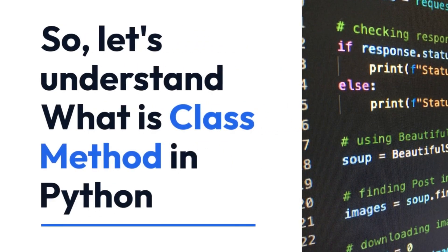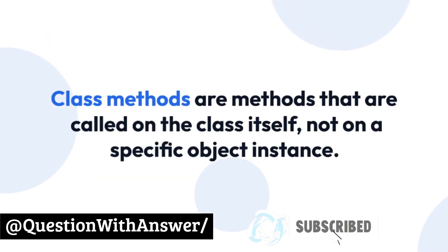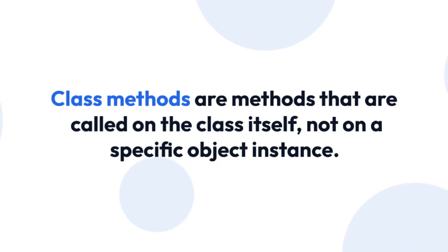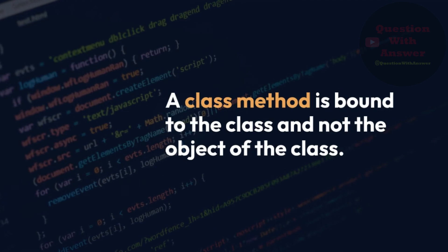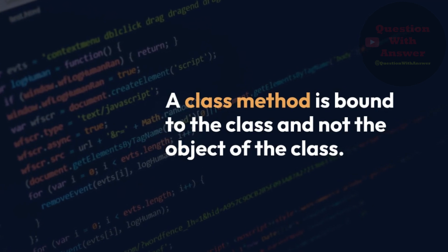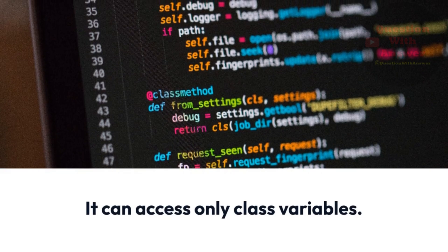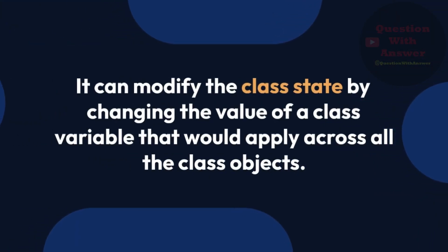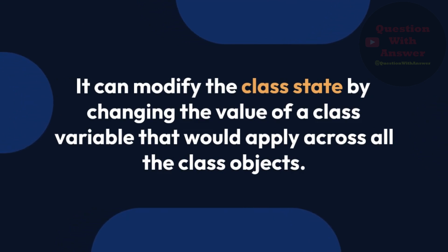Let's understand what a class method is in Python. Class methods are methods that are called on the class itself, not on a specific object instance. Therefore, it belongs to the class level, and all class instances share a class method. A class method is bound to the class and not the object of the class. It can access only class variables, and it can modify the class state by changing the value of a class variable that would apply across all class objects.